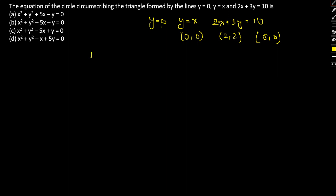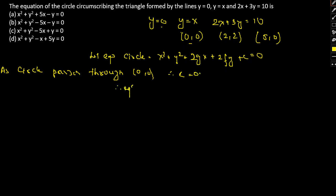Let the equation of the circle be x² + y² + 2gx + 2fy + c = 0. As the circle passes through (0,0), therefore c = 0. So the equation becomes x² + y² + 2gx + 2fy = 0.